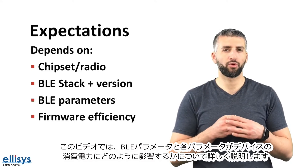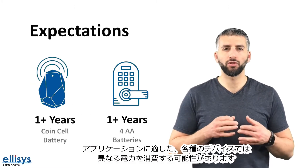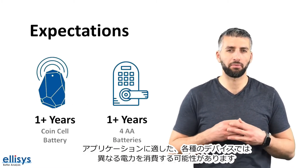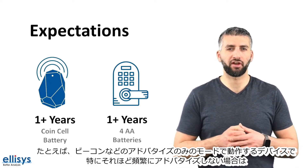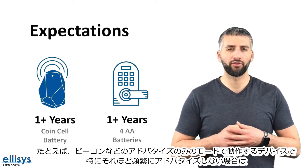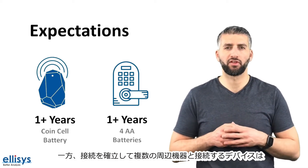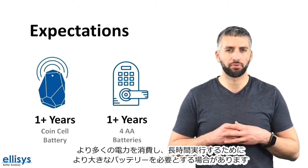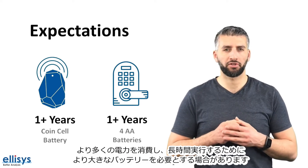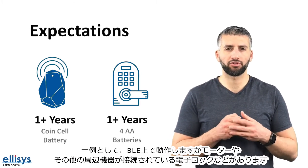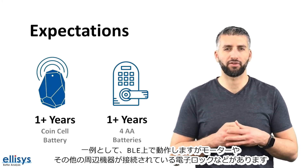In this video, we will focus more on the BLE parameters and how each of them affects the power consumption of your device. Different types of devices, depending on the application, can consume varying amounts of power. For example, devices that operate in advertise-only modes, such as beacons, can run on a coin cell battery for months or even years, especially if they don't advertise that often. Whereas devices that establish a connection and engage multiple peripherals will consume a lot more power and may need larger batteries. One example would be an electronic block that operates over BLE but also engages a motor and other peripherals attached to it.